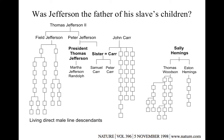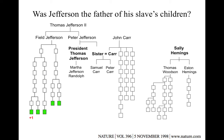DNA testing found the Jefferson group to be an exact match, indicating they had inherited their Y-DNA unchanged from their common ancestor Field Jefferson, the president's uncle. Since the president and his uncle shared a common ancestor in Thomas Jefferson the Second, the assumption is that President Thomas Jefferson would have had exactly the same Y-DNA. On the Carr side, three living male-line descendants also showed an exact match, indicating their common ancestor passed the same Y-DNA unchanged to all three.